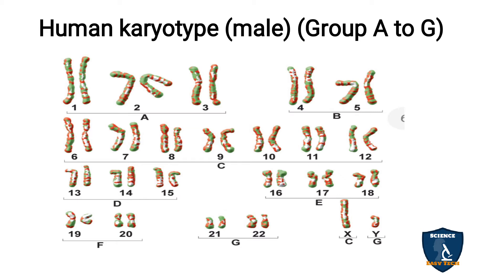This is human karyotyping — you can see that 23 chromosomes are separated and arranged. This is the karyotyping.